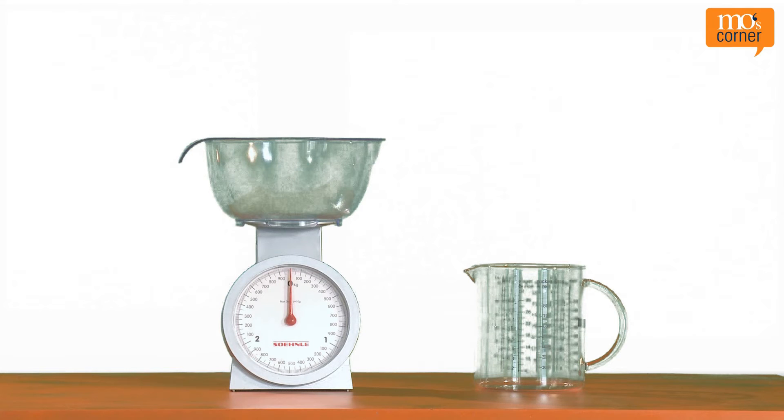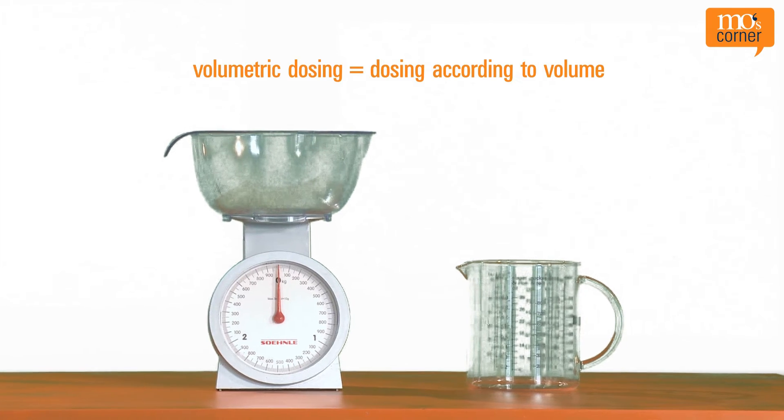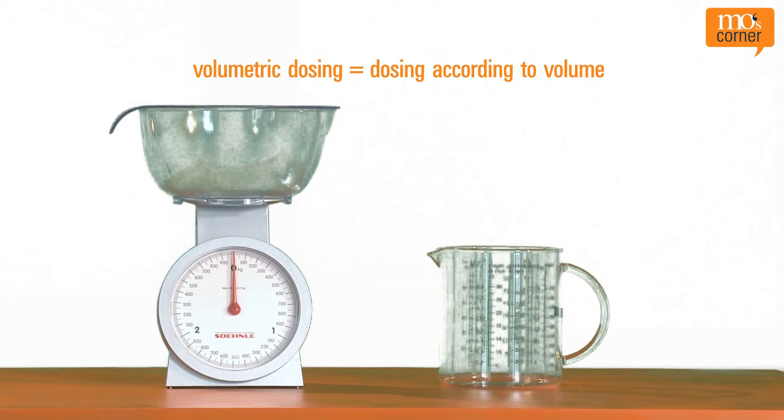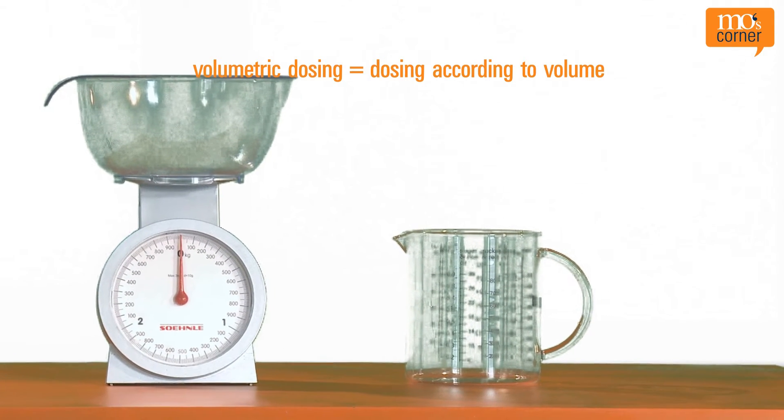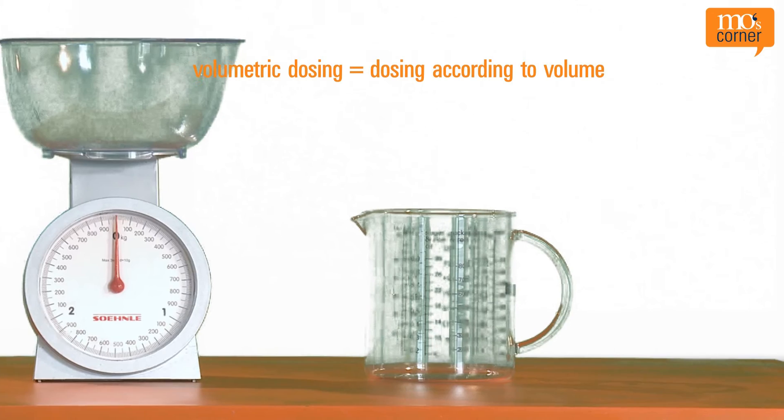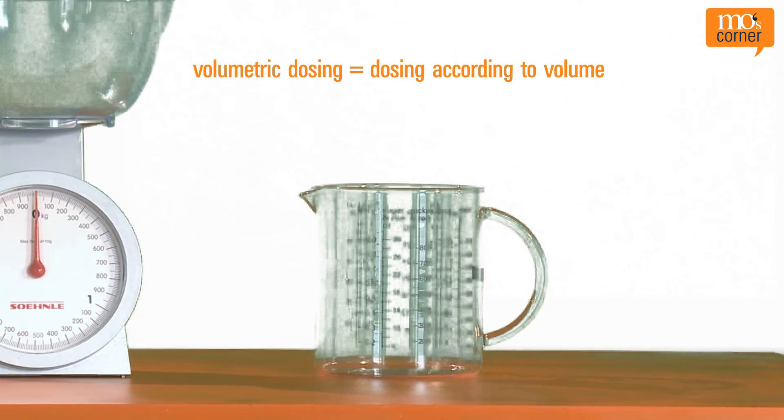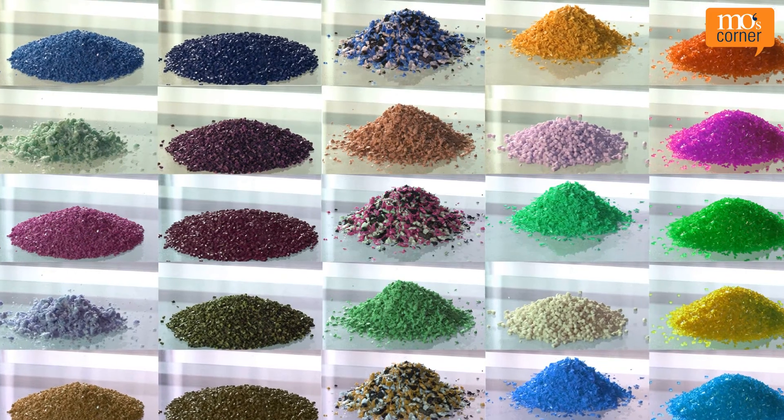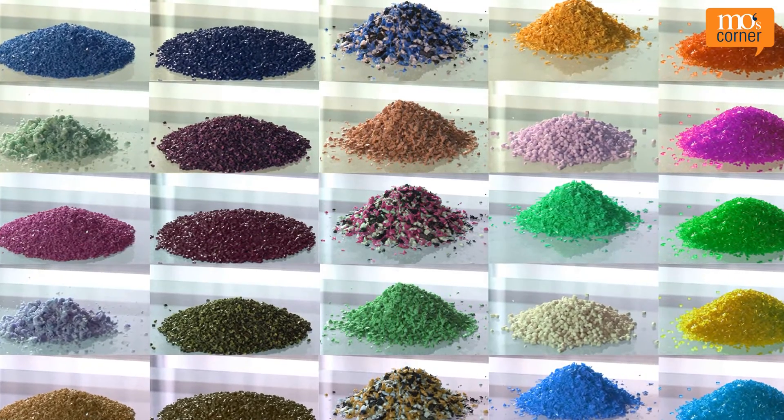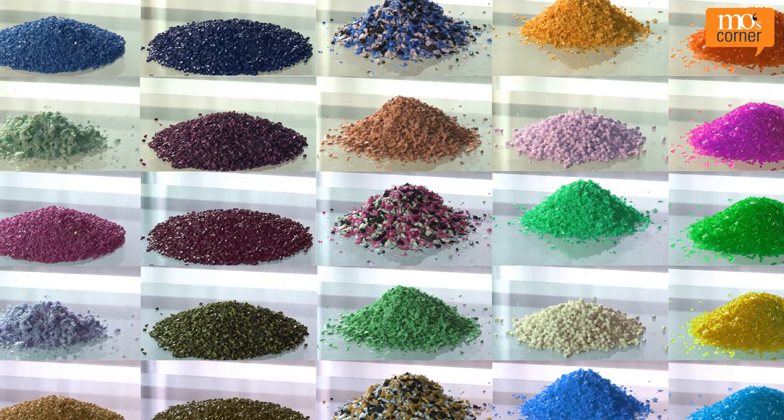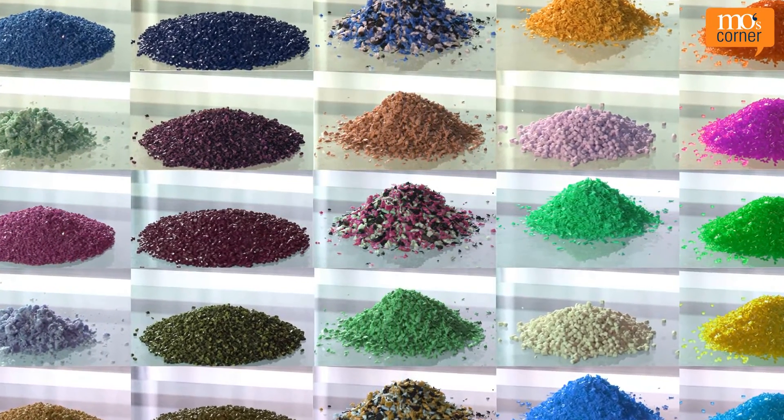There are different technical methods that can be used to dose a material. With volumetric dosing, the materials are dosed according to volume. So for example, one liter of white to 0.5 liters of red granules. Because different granules can have different densities, one must always perform a calibration test first in order to achieve the correct result.